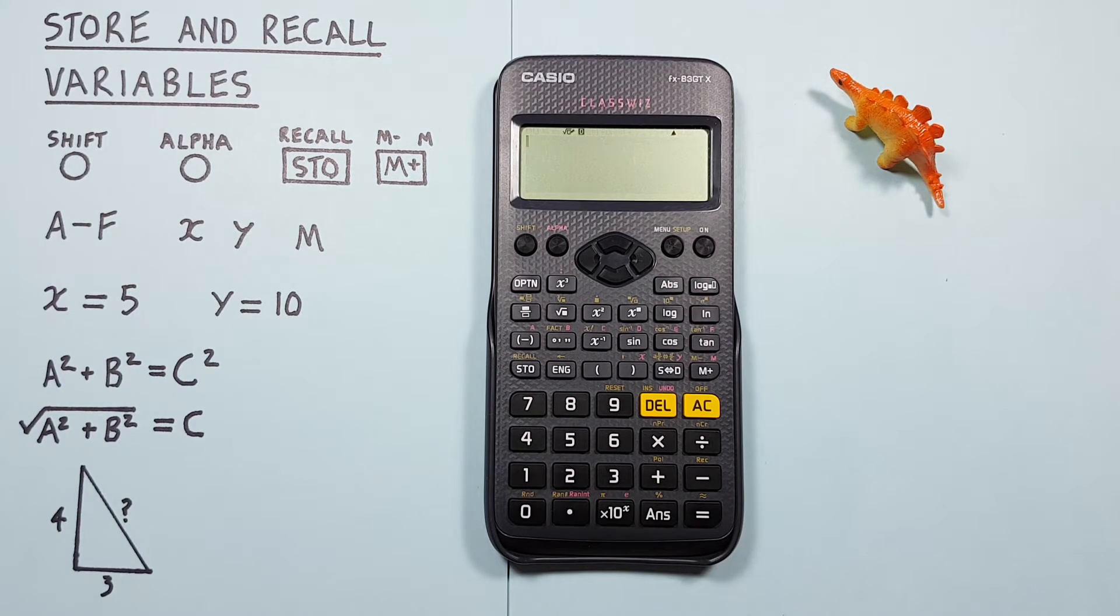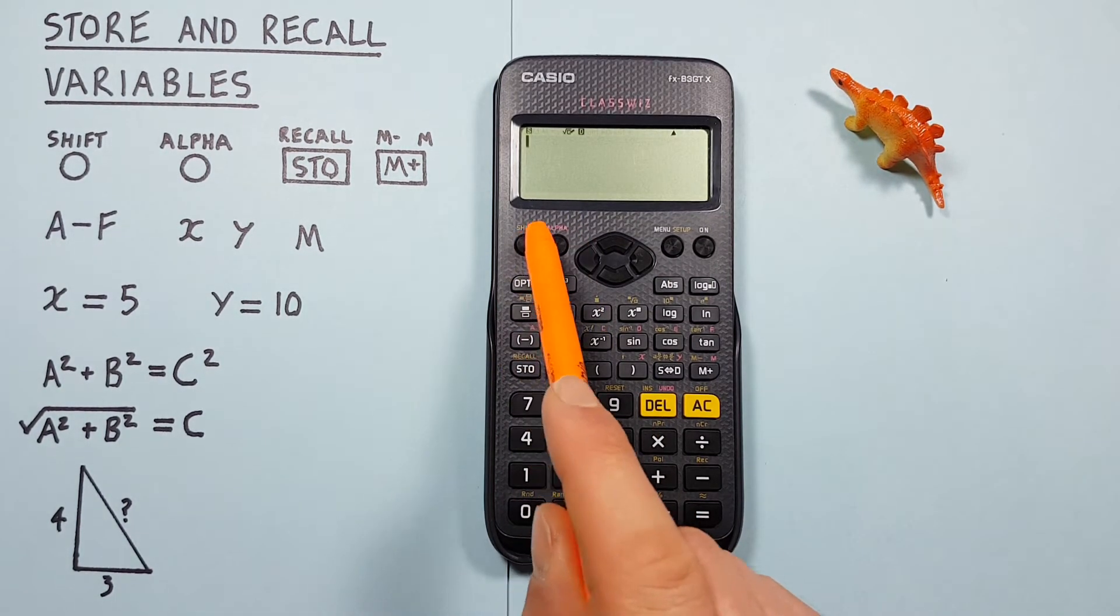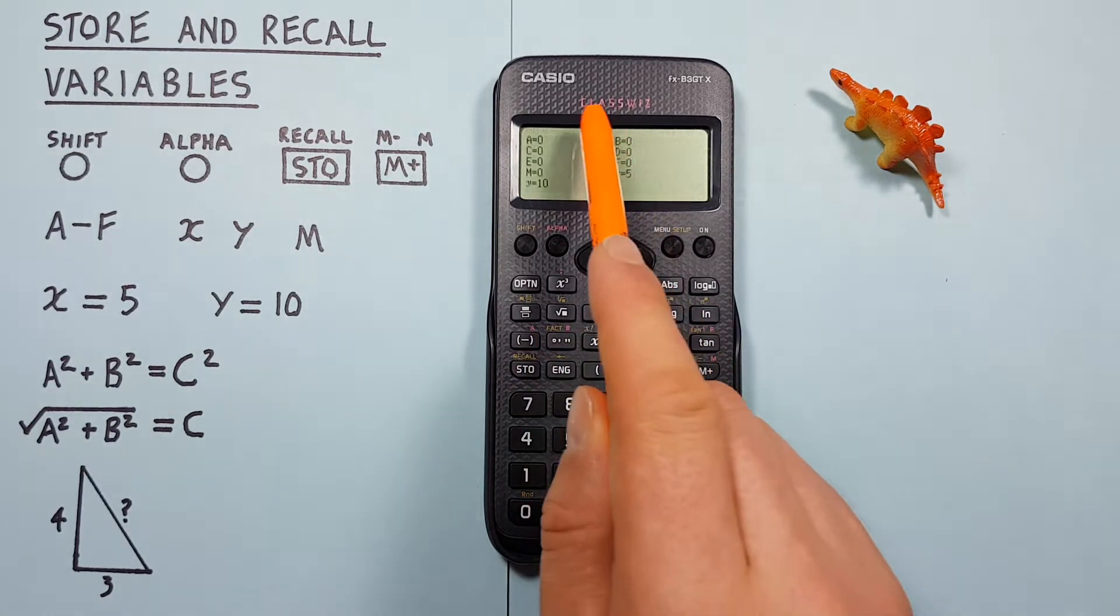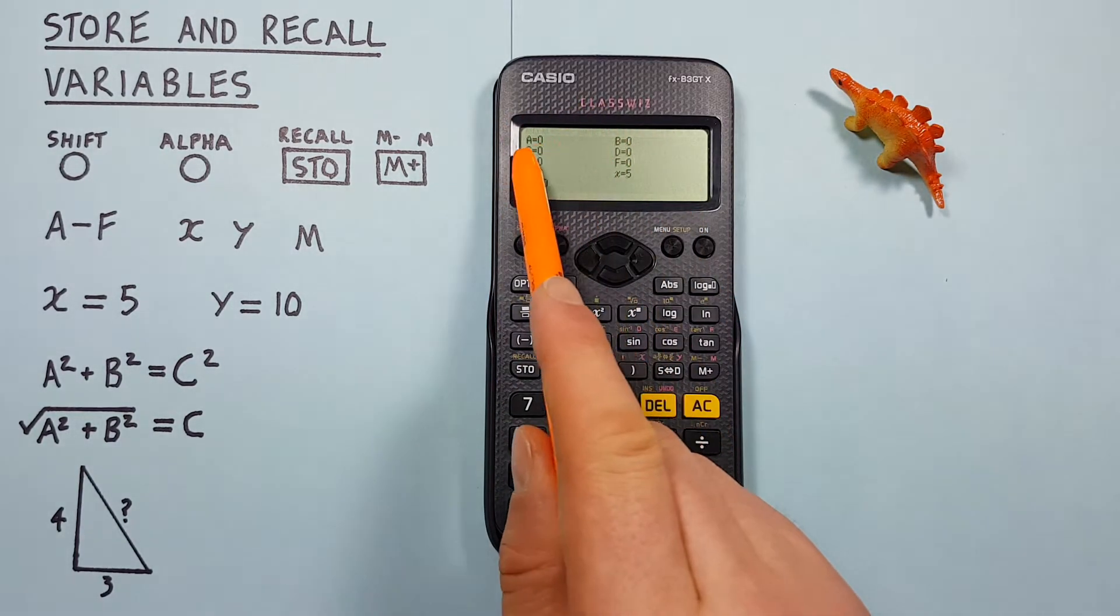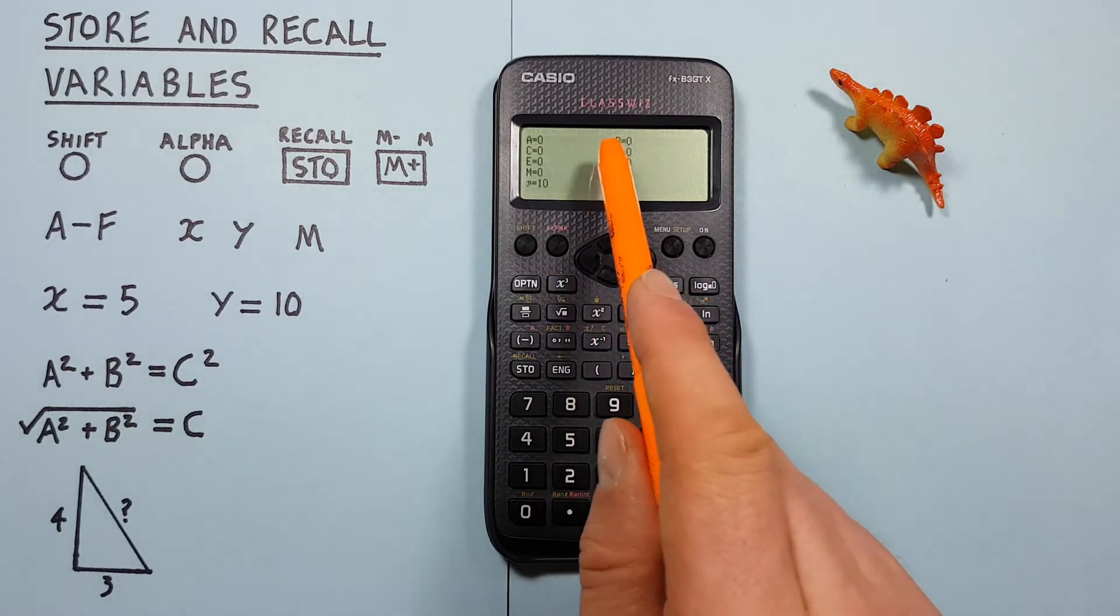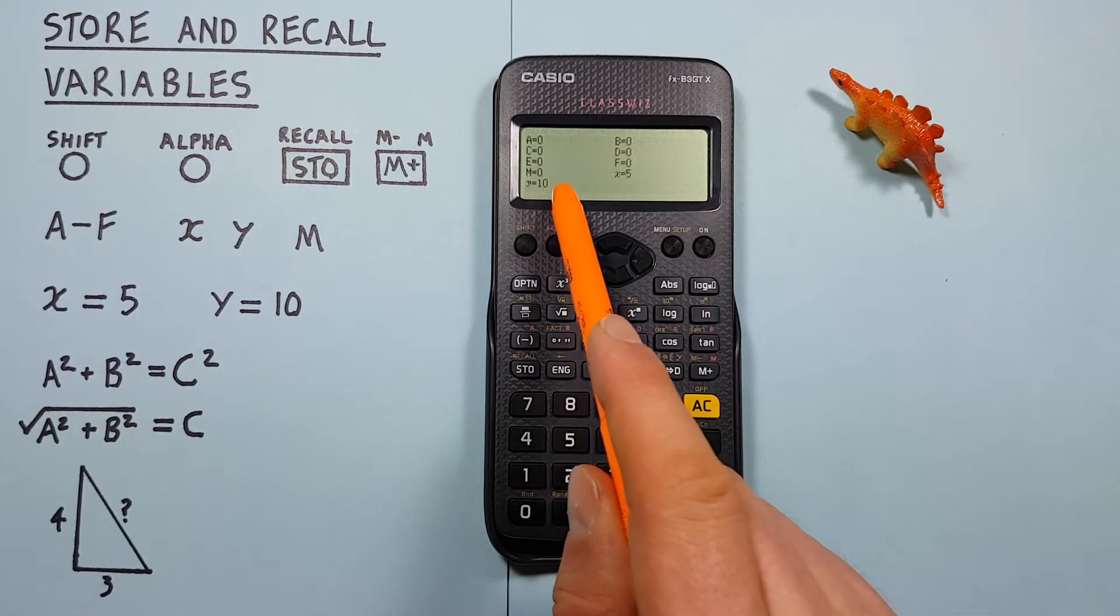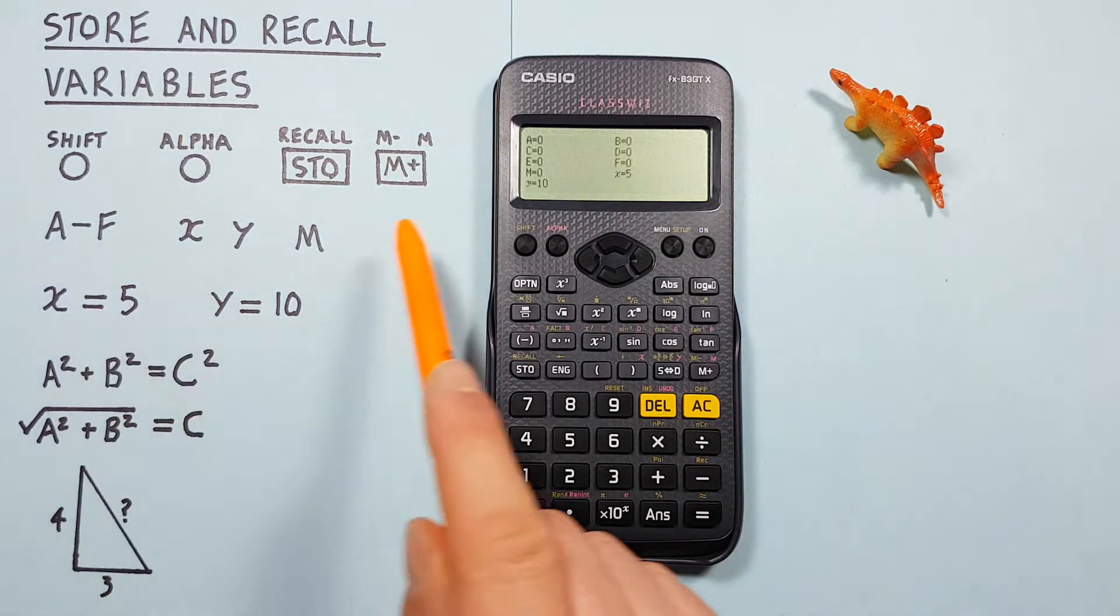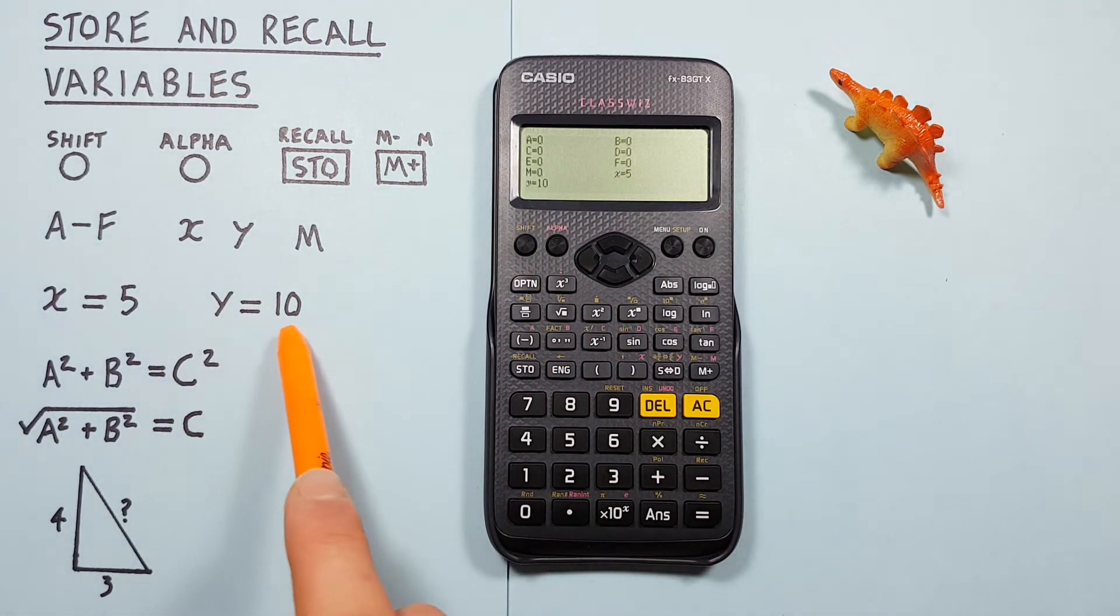We can view what we have stored by pressing the shift and then the store key with the shift function of recall. That'll bring us to this menu here where we see A, B, C, D, E, F, and M memory slots all have 0 in them but X has 5 and Y has 10 as we stored.